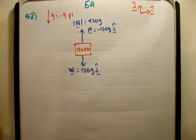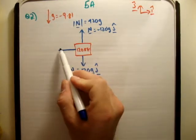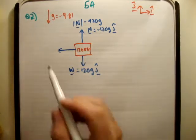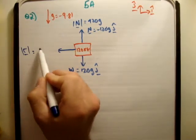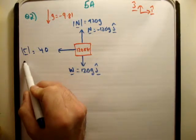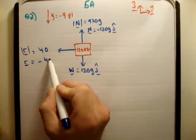Next we have the resistance force going in negative I. So the resistance force, its magnitude is equal to 40N, and the resistance is negative 40 I hat, like so.